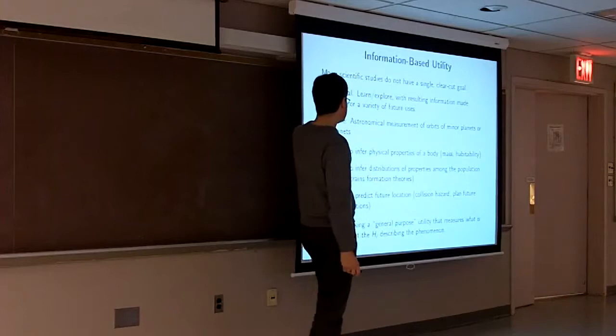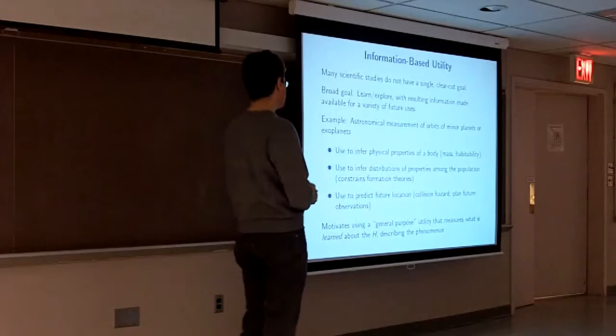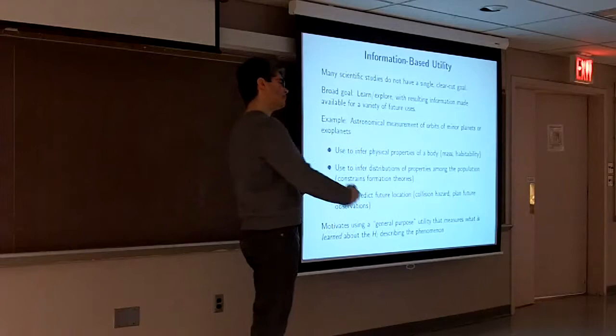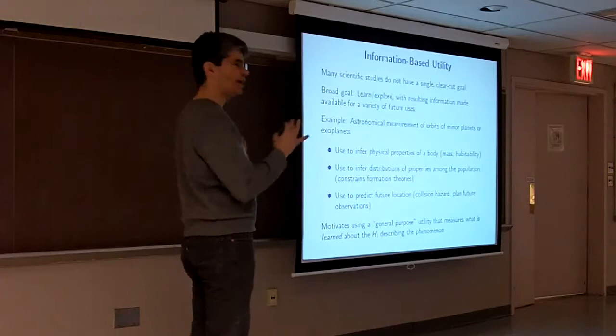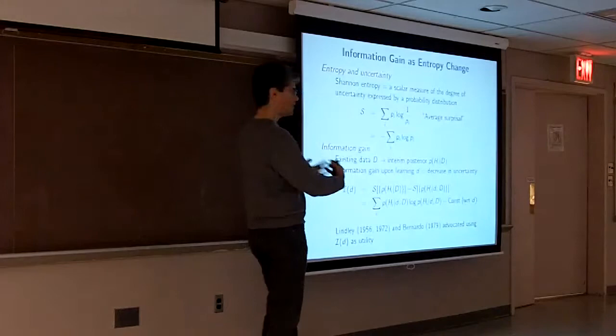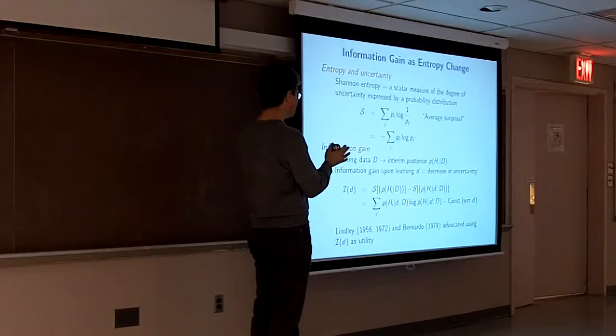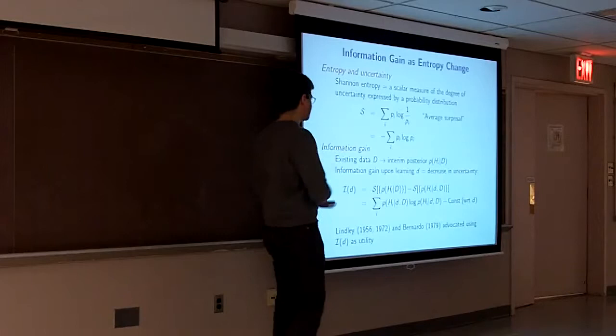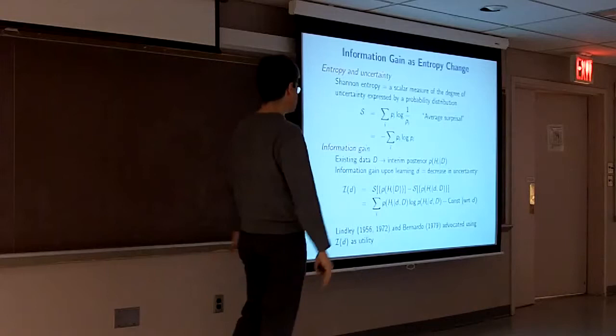What utility should we use in particular for exoplanet observations? A lot of scientific studies don't have a single clear-cut goal that would let us try to come up with a particular cost, like we want to know the period and we want its accuracy to be so and so. Usually the kinds of experiments you do in astronomy, we have a kind of a broad goal. We just want to learn and explore and the information we discover will be used for lots of different purposes by different scientists. For exoplanets you might use them for the characterization of a planet to infer the mass of a planet or whether it's in a habitable zone. Or you might be interested at the population level or you might want the information to plan the TPF follow-up. So we're going to try to use a general purpose utility. And for that we turn to information theory.